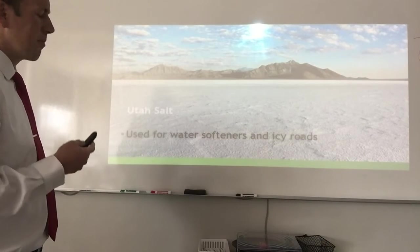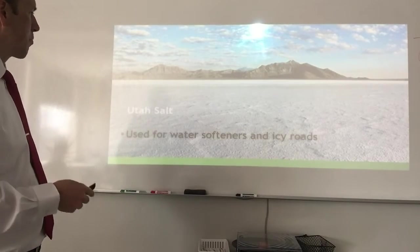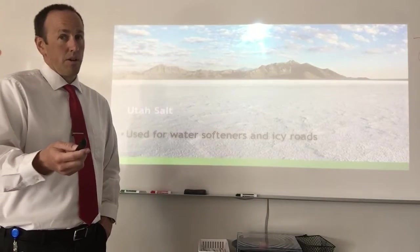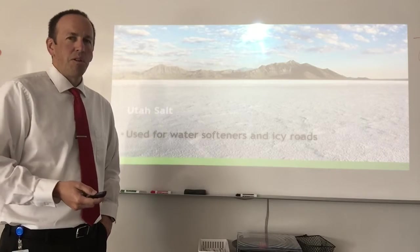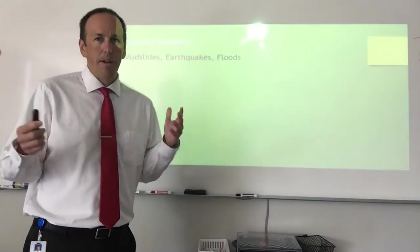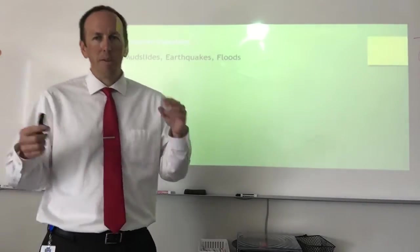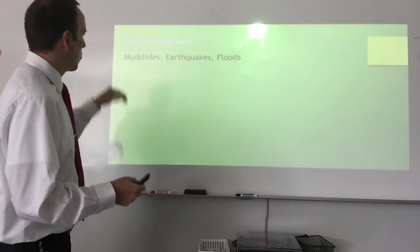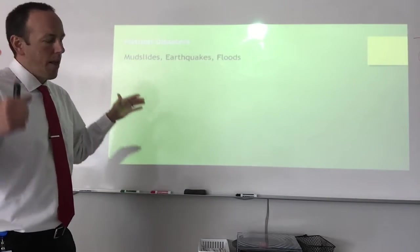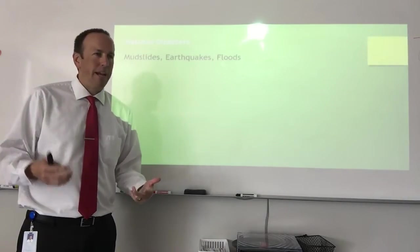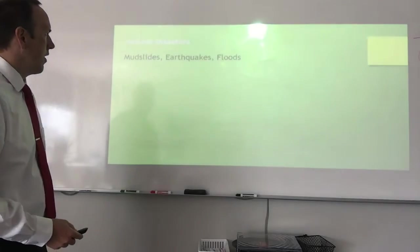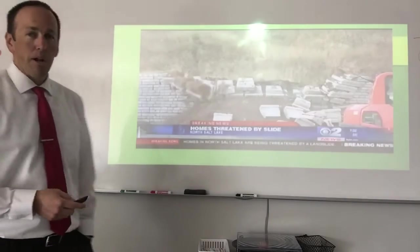Utah salt — it can be used for lots of different things, but it's primarily used for water softeners and icy roads, according to your book. Now we're going to talk about natural disasters. The number one biggest, most expensive natural disaster in Utah is mudslides and flooding — too much water. The snowpack melts, maybe it's rained and snowed, and then we get some type of mudslide or flood from that.